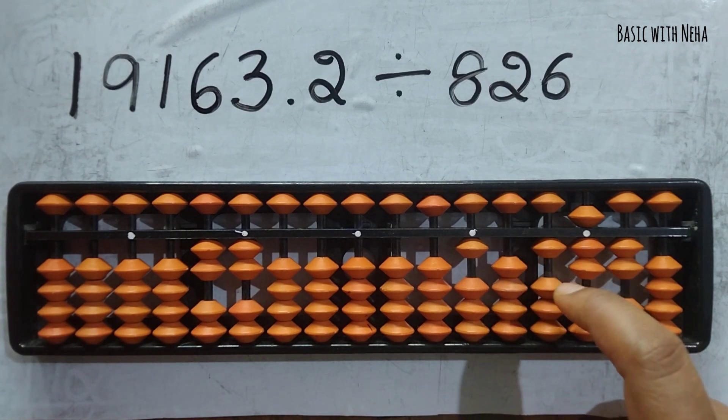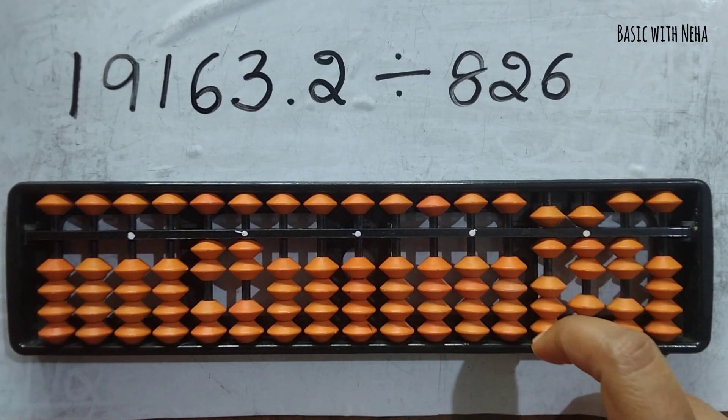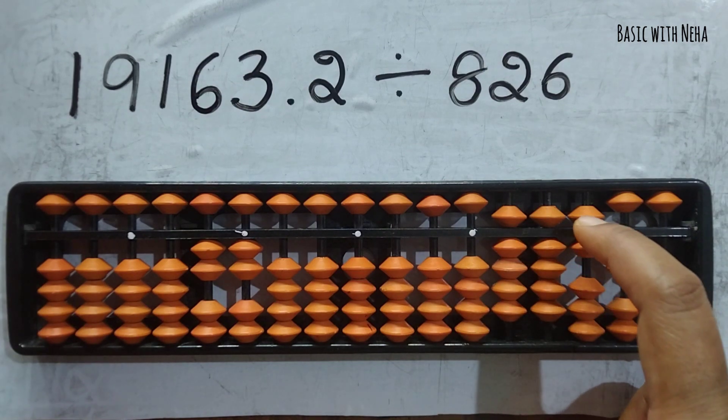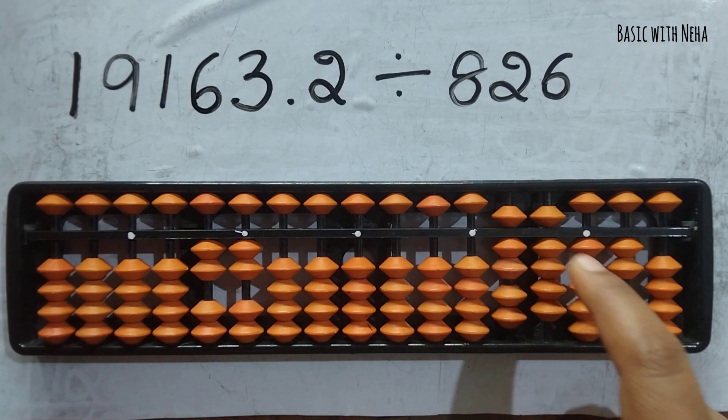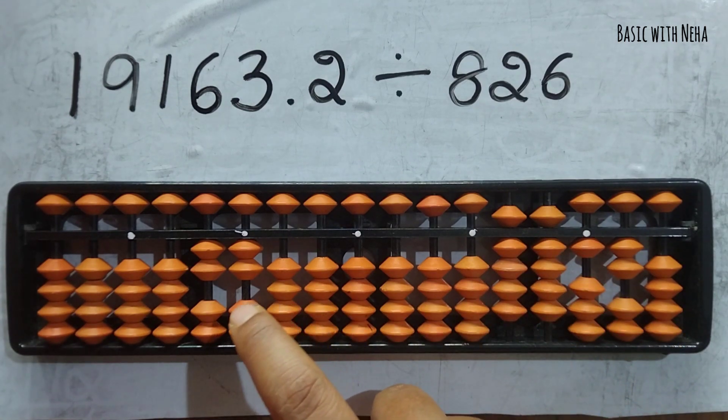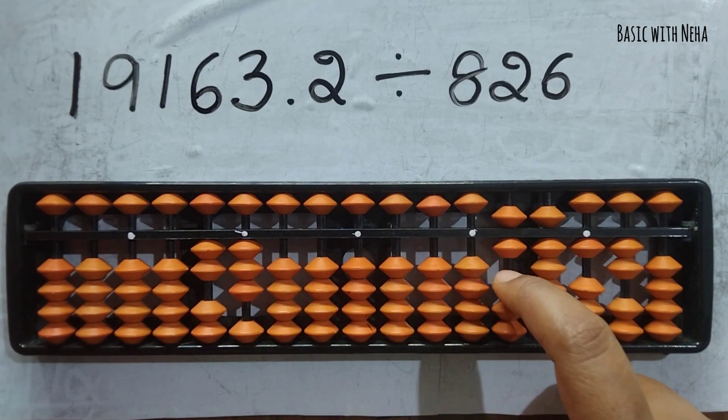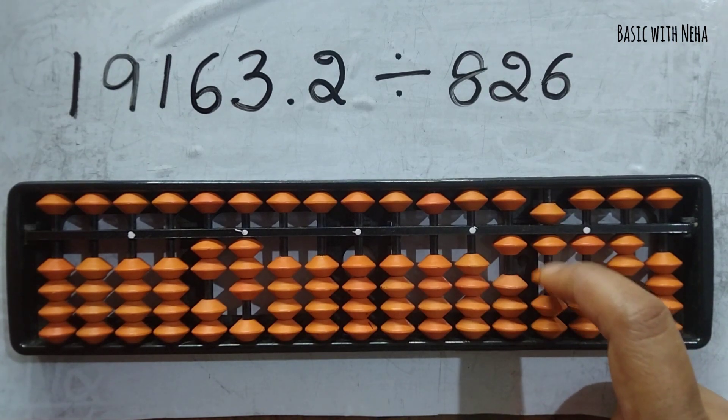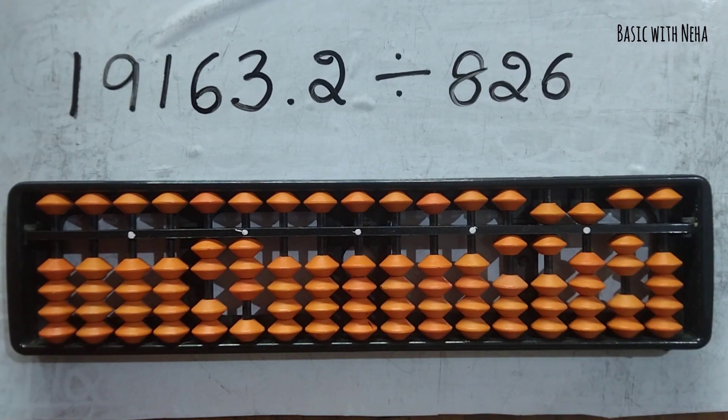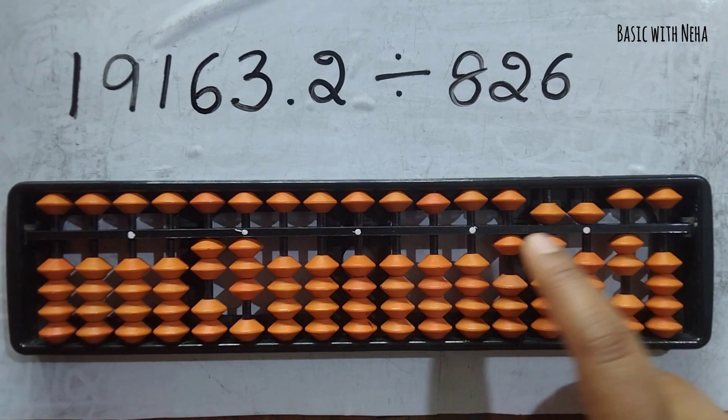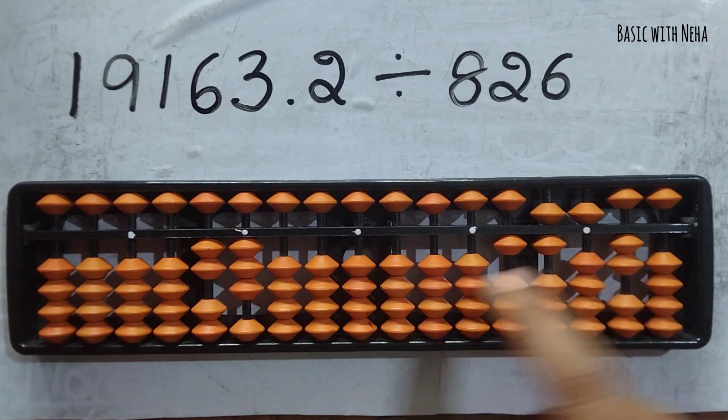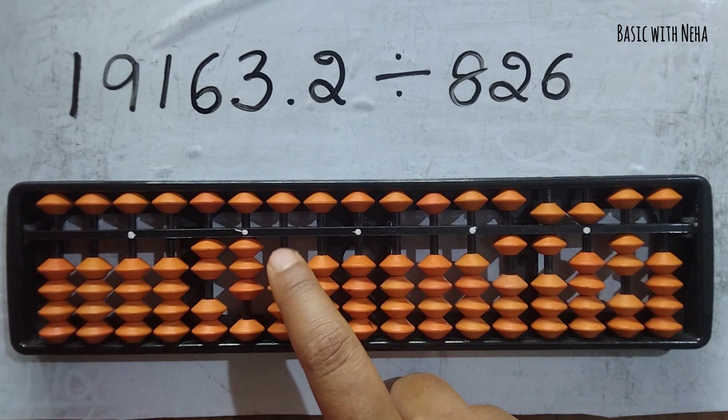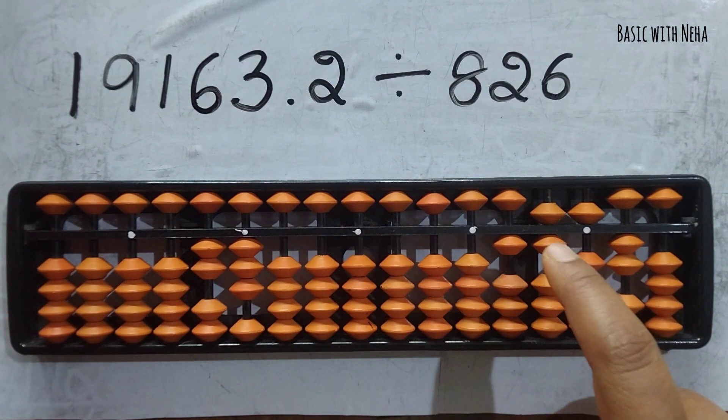Again, I have a bigger number. 826 ones: 8, 2 is minus 10 plus 8. I still have a bigger number, 991. Another 826. Now 65 is smaller than 826, so I have to consider all four rods, so now my answer will come here in the decimal place. Again, 826 ones: minus 10 plus 2, 26.